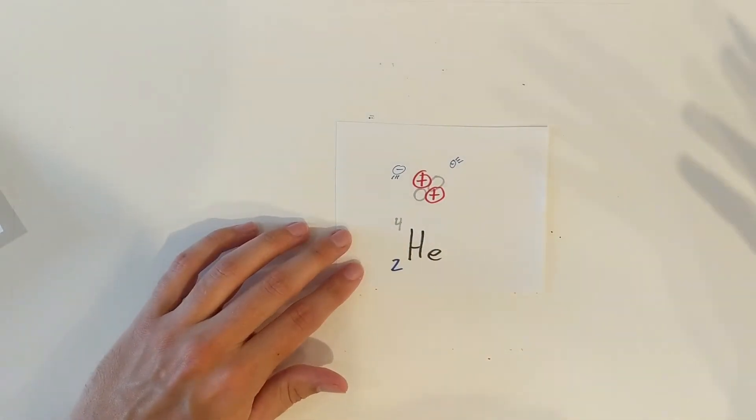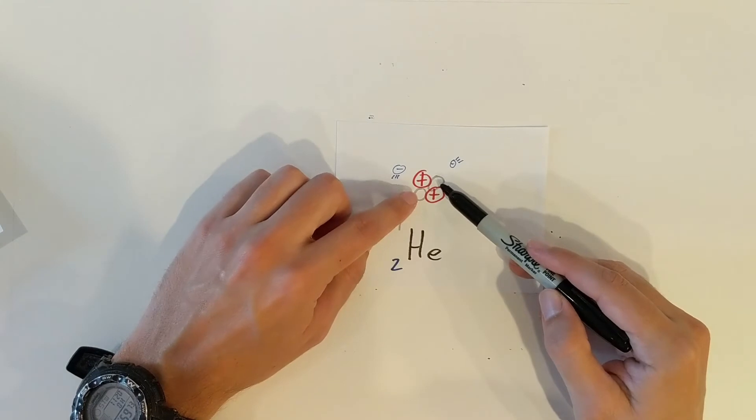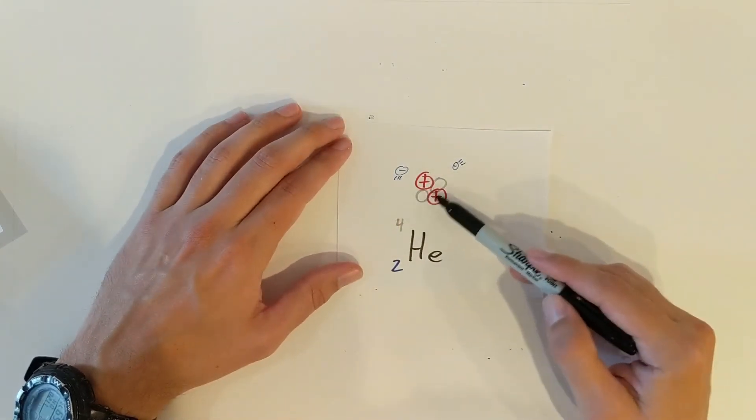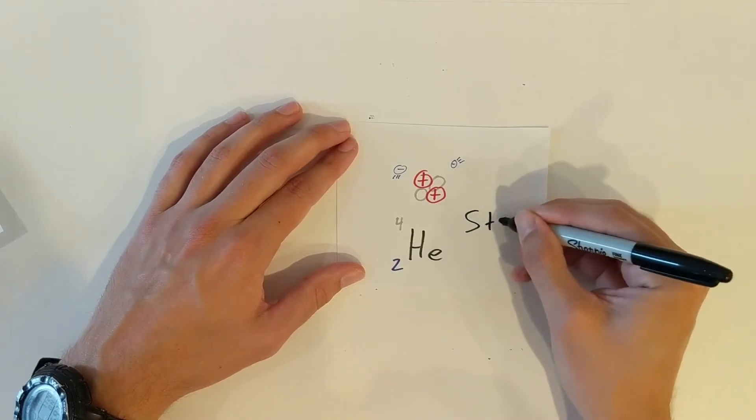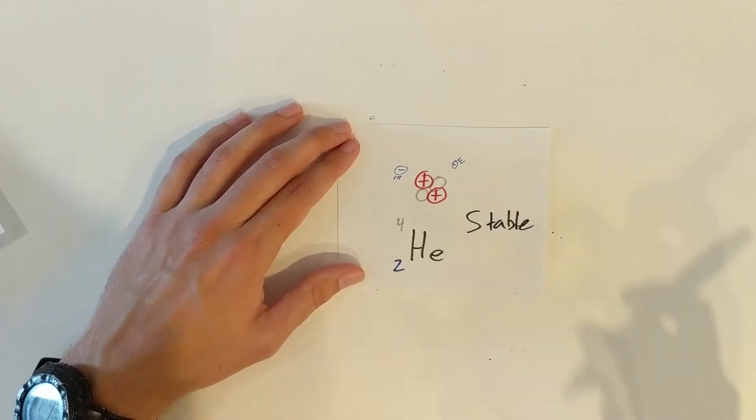If we wanted to make that atom stable, what we would need would be two neutrons to help hold our protons together in our nucleus. So this would be an example of a stable atom.